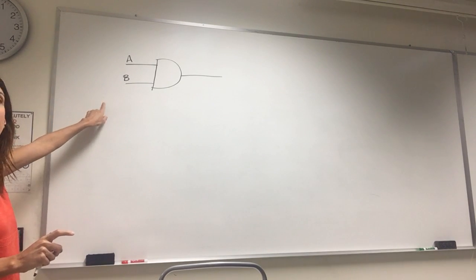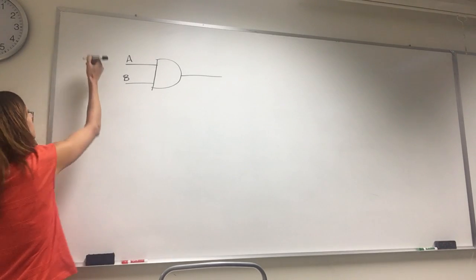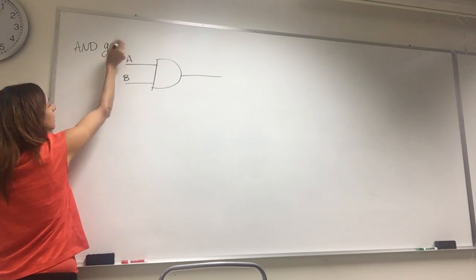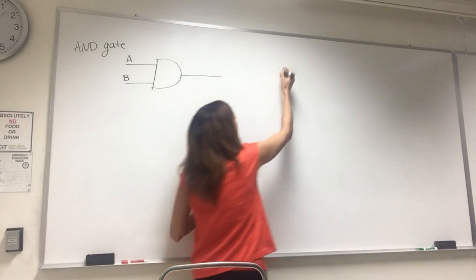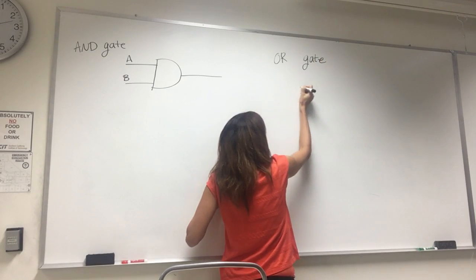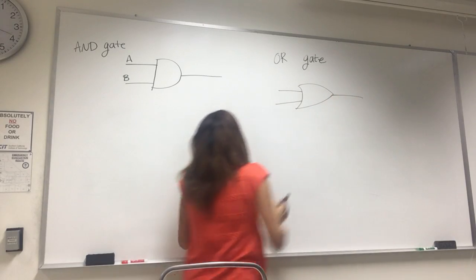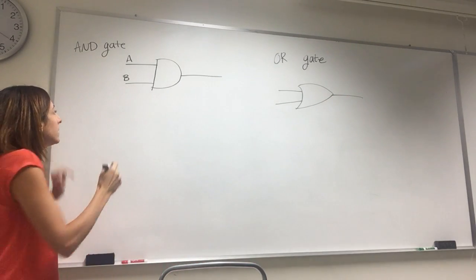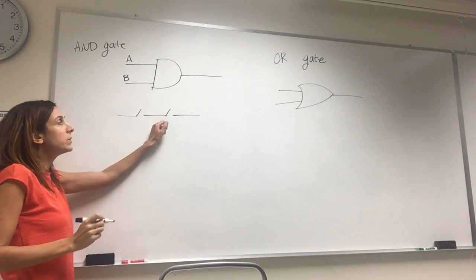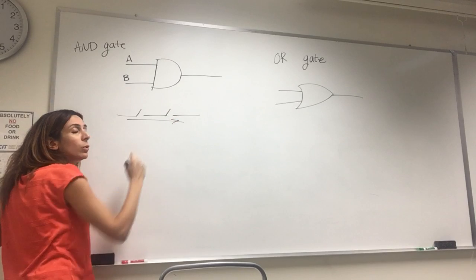So the first half we'll talk about gates. As you know, we have AND gates. We talked about OR gates. So AND gate was just two switches in series. So if one of these switches are open, I don't have current going through, right?